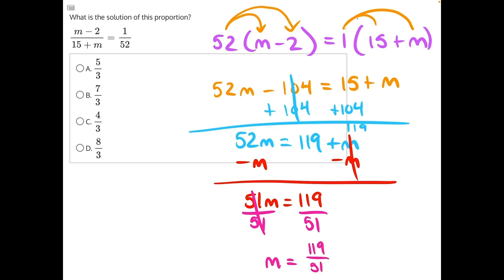Now we just need to simplify this fraction, but that's not going to be as easy as it looks, because I don't often think about the factors of 119 or the factors of 51. So let's take a look at our answer choices to get some clues.